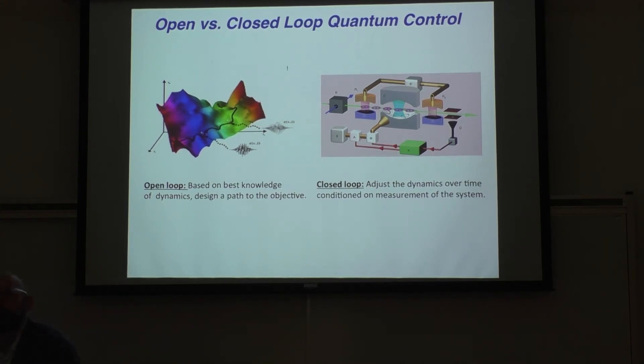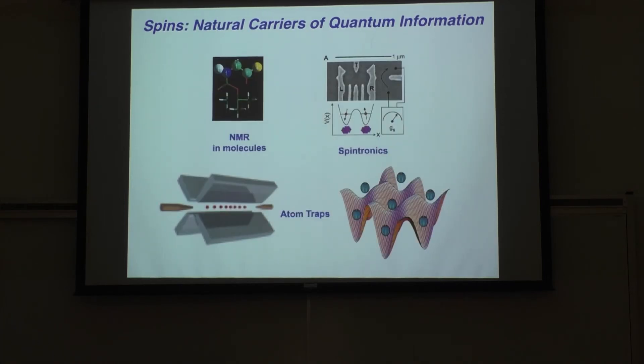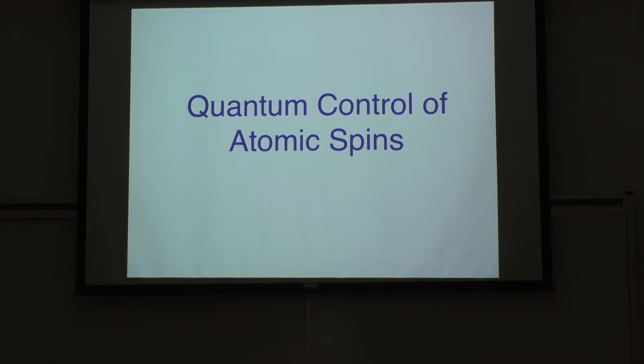But we can also think about an open-loop kind of paradigm where we say, this is some optimization landscape. This is the yield as a function of parameters. This is what the yield will be for this chemical reaction as a function of some parameters of my laser pulse. I just have to somehow climb to the top of this mountain. If I know what that landscape is before I do the experiment, then I can just try to see what's the right path to get me to the top. That's optimization. That's open-loop control. So that's what we're going to look at, thinking about quantum control in terms of spins.